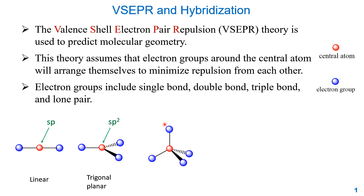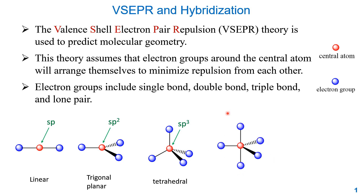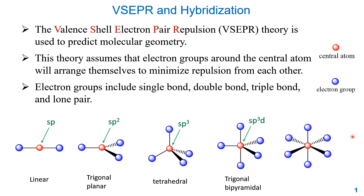If there are four electron groups, the best way to minimize repulsion will be tetrahedral, and the central atom will be sp3 hybrid. If there are five electron groups, the geometry of the electron groups will be trigonal bipyramidal, and the central atom will be sp3d hybrid. If there are six electron groups, the geometry will be octahedral, and the central atom will be sp3d2 hybrid.